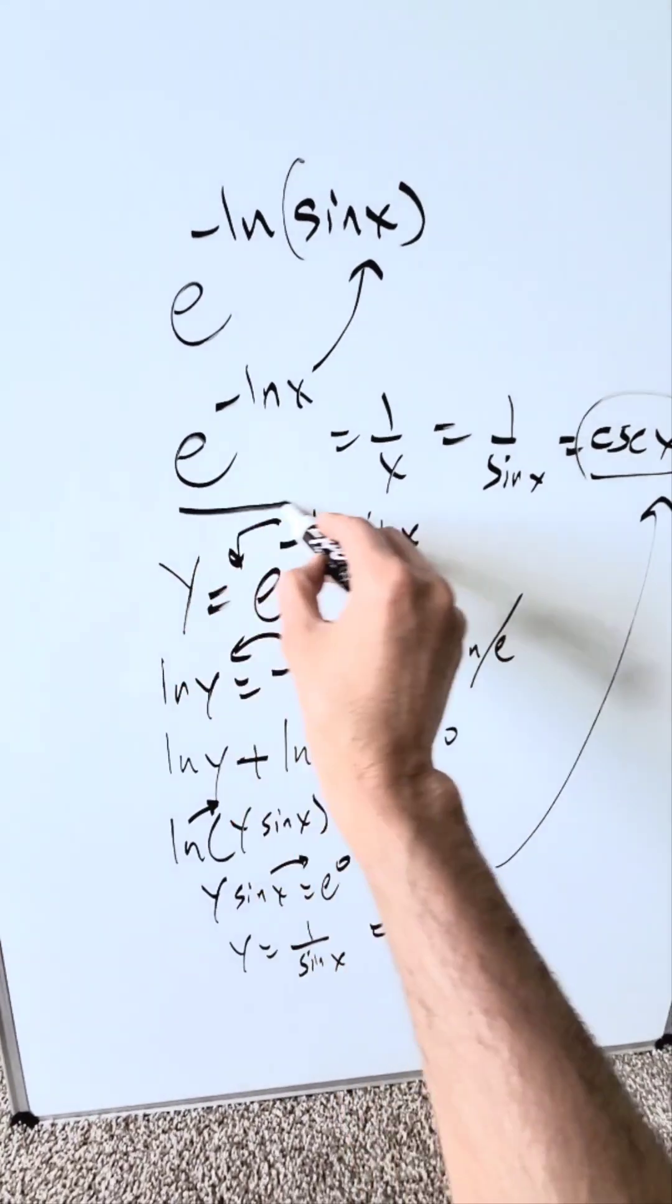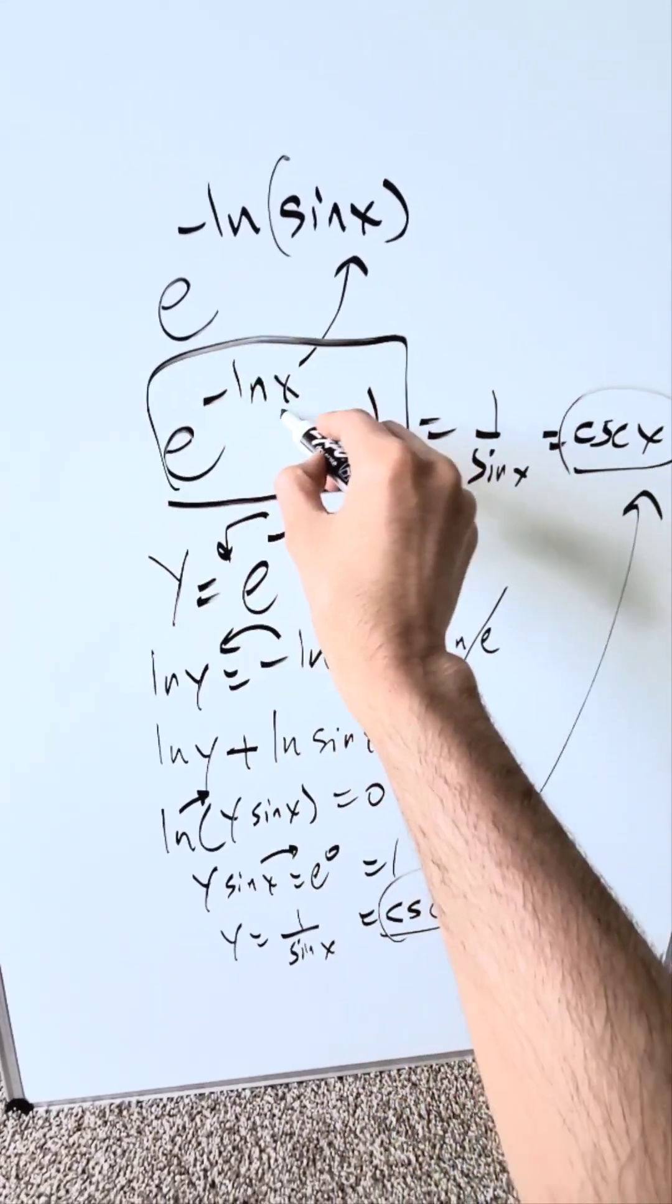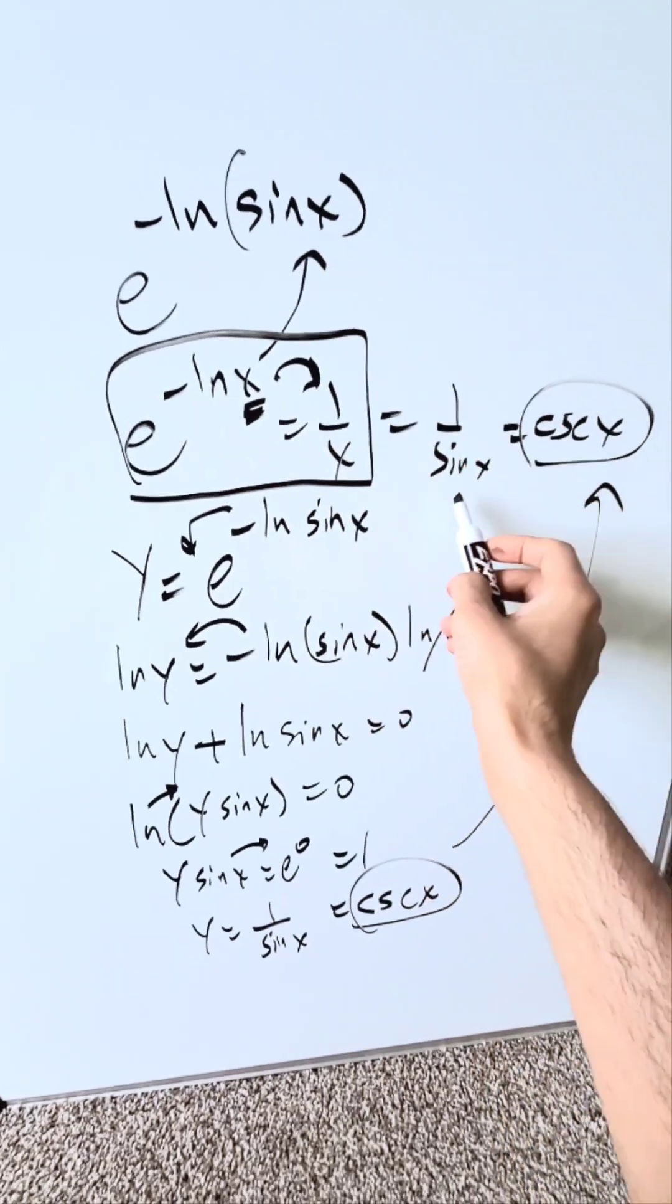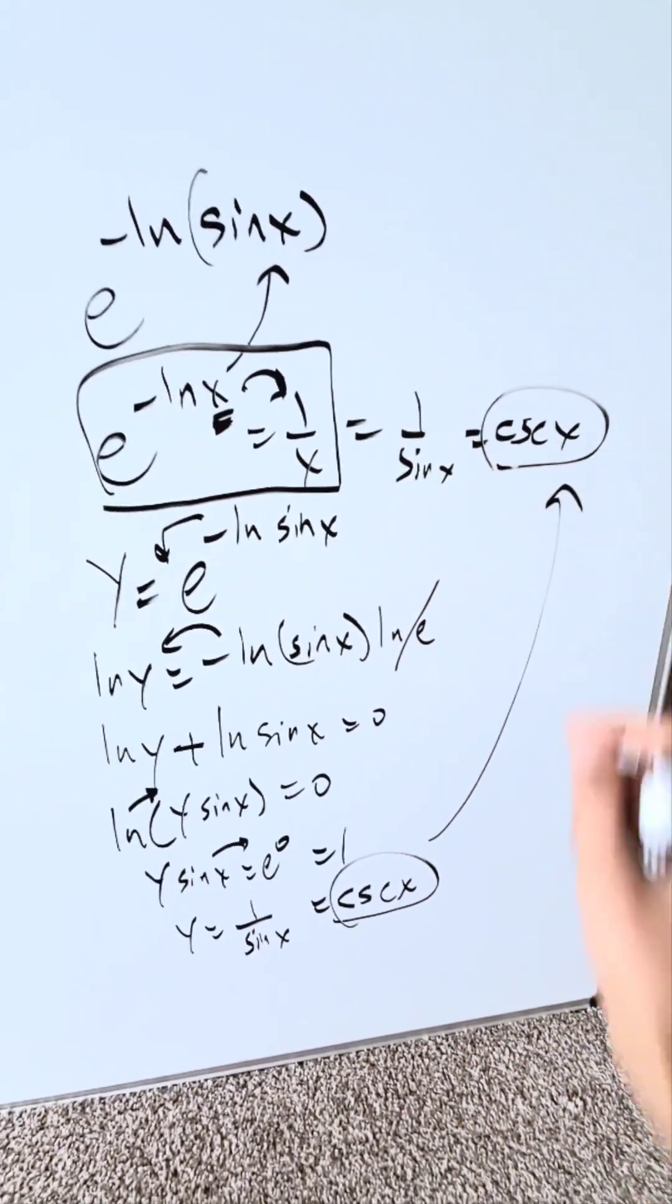What's the basic identity? It's this: e to the power of minus natural log x, whatever this may be, is always equal to 1 over x. Hence, 1 over sin x. Hence, cosecant x.